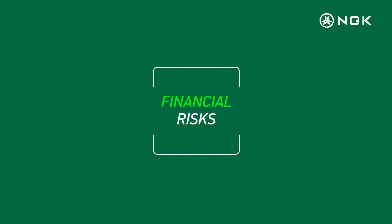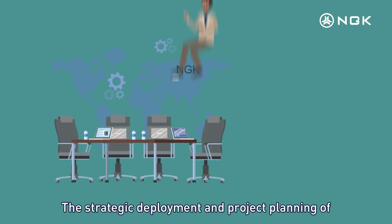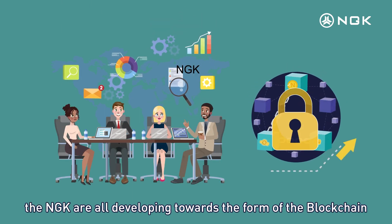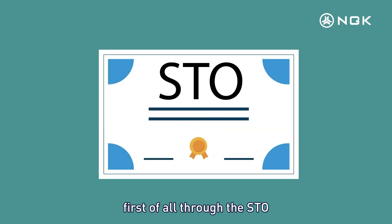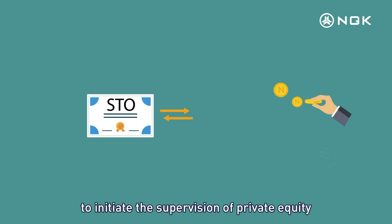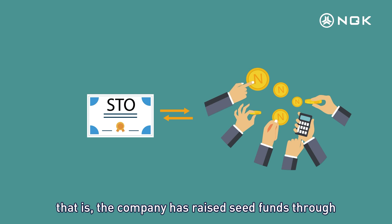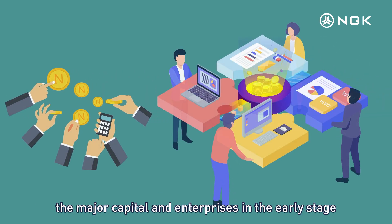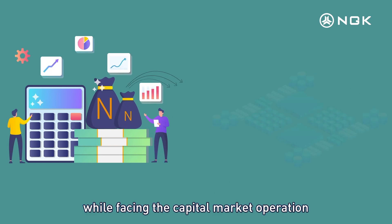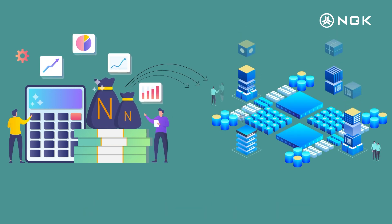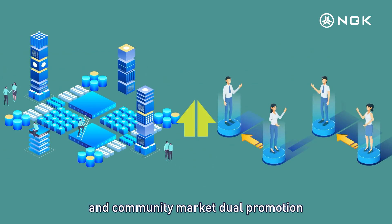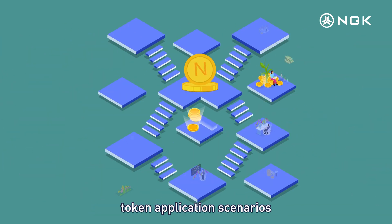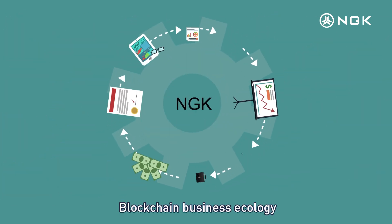Financial Risks. The strategic development and project planning of NGK are all developing towards the blockchain form. First, through STO, it initiates supervised private equity. The company has raised seed funds through major capital and enterprises in the early stage, and combined with its own capital strength, it promotes through both capital market and community market simultaneously, constantly building market consensus, token application scenarios, and blockchain business ecology.